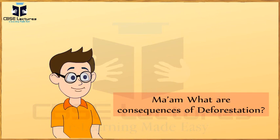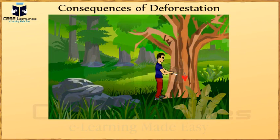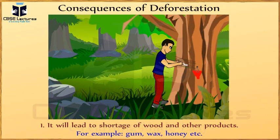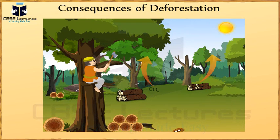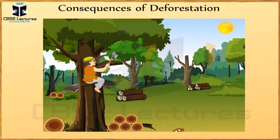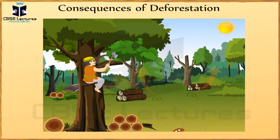What are the consequences of deforestation? It will lead to shortage of food and other products like gum, wax and honey. It will cause increasing temperature of earth's atmosphere leading to global warming. Fewer trees means less carbon dioxide is absorbed, increasing CO2 in the atmosphere. Carbon dioxide traps sun heat, raising earth's temperature and causing global warming.